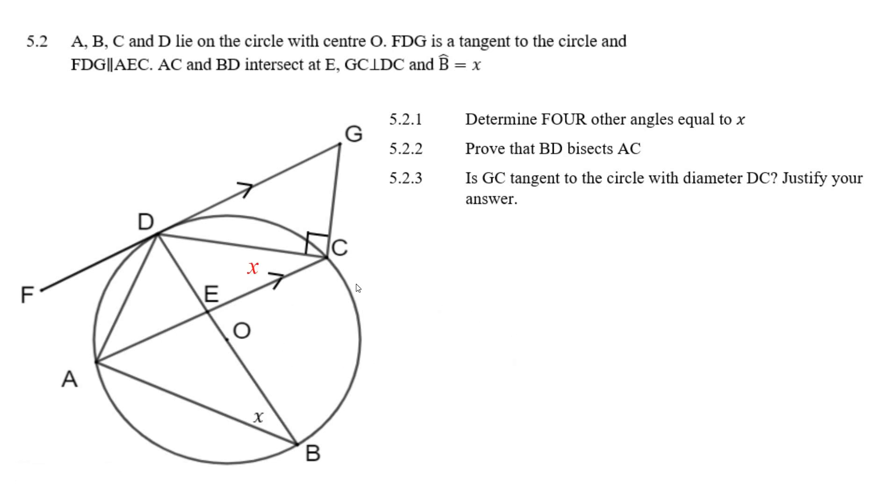Well, my first one was that this angle here, D, C, E, must be X. Angles in the same segment, A, D here. Then I figure this must be X because of alternate angles. These are two parallel lines, so that kind of makes sense.